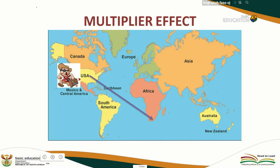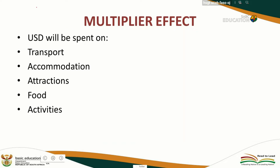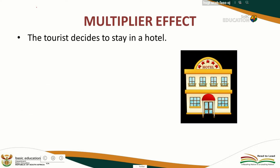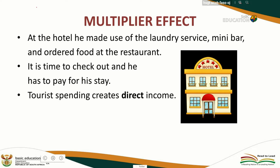For example, a tourist from America comes to visit South Africa and spends money on transport, accommodation, attractions, food, and activities. This tourist decides to stay at a hotel and makes use of the laundry service, mini bar, and restaurant. There are also people working at the hotel — receptionist, bartender, cleaner — and it is time to check out and pay for his stay.